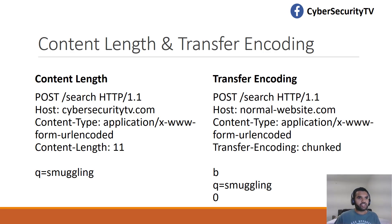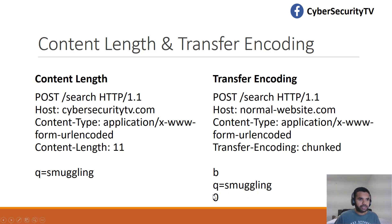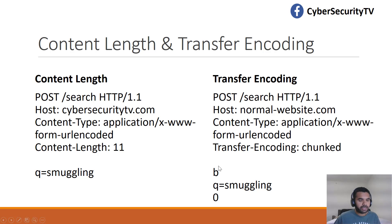Transfer-Encoding uses chunked encoding. If you specify Transfer-Encoding chunked instead of Content-Length, the server will interpret whenever it receives a zero-byte message as the termination of the request, and any characters after that as a new request. For example, a parameter like 'q=smuggling' followed by a zero byte is one complete request, but anything after the zero is a new request. With chunked encoding, if you say the number 8, the next eight characters are part of this request, then a new request begins.